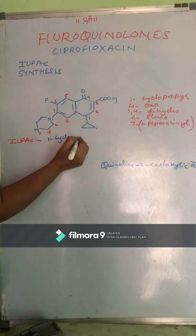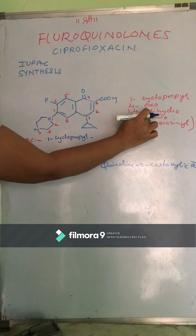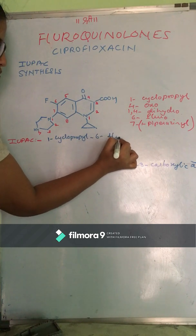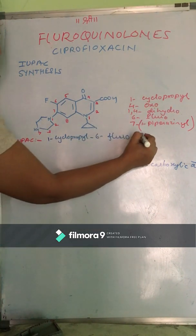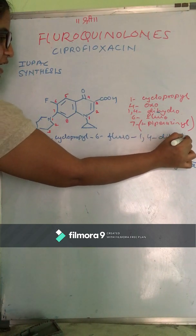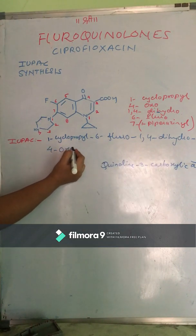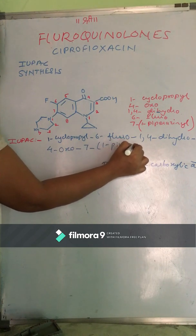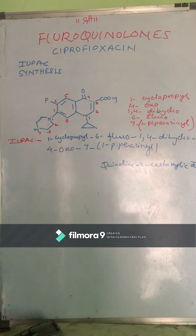So in alphabetical order: first is 1-cyclopropyl, then C comes before F so next is 6-fluoro, then 1,4-dihydro, then 4-oxo, then 7-(1-piperazinyl), and the root name is quinoline-3-carboxylic acid. This is our IUPAC name.